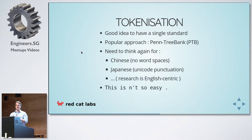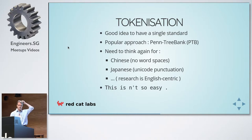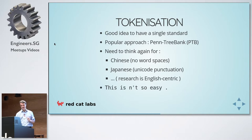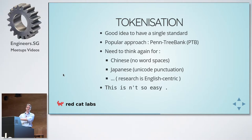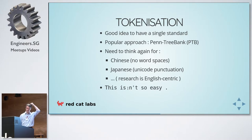Tokenization: you've got a sentence and you want to break it into pieces. It's a good idea to have a single standard throughout your code base, otherwise you'll be fighting yourself with spaces and commas. There's the Penn Treebank tokenization, which is often used. But what do you do about Chinese text when there are no spaces? What about Japanese, which has different punctuation conventions? A lot of NLP research is very English-centric, which is one reason why having an NLP startup here is a different animal from one based in Silicon Valley.